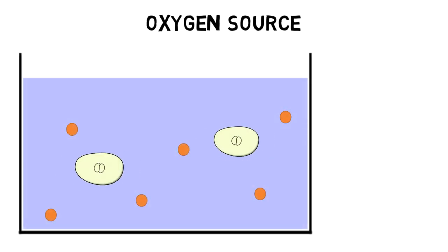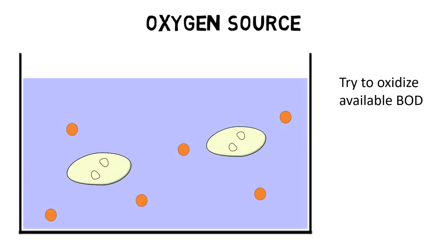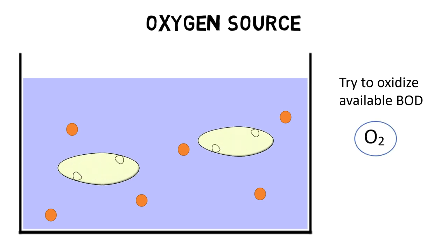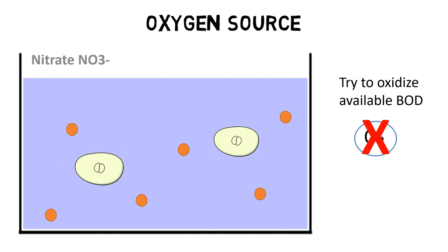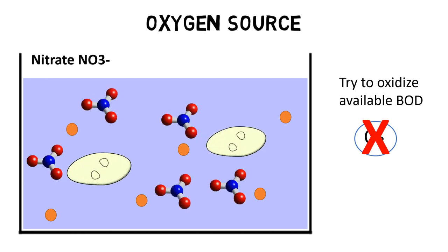The heterotrophic bacteria then try to oxidize the available BOD under the consumption of oxygen. However, as no dissolved oxygen is present in an anoxic basin, they have to look for alternative sources.